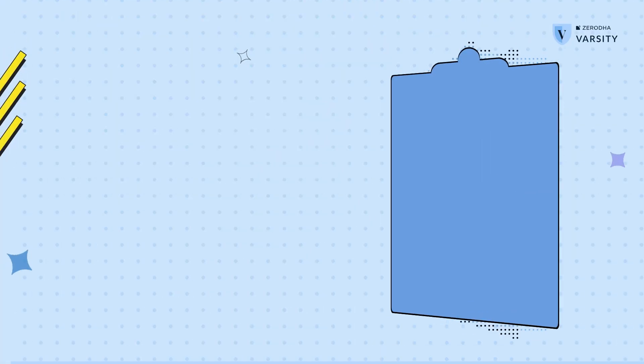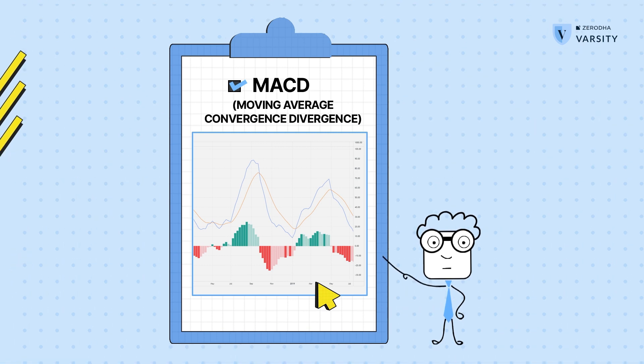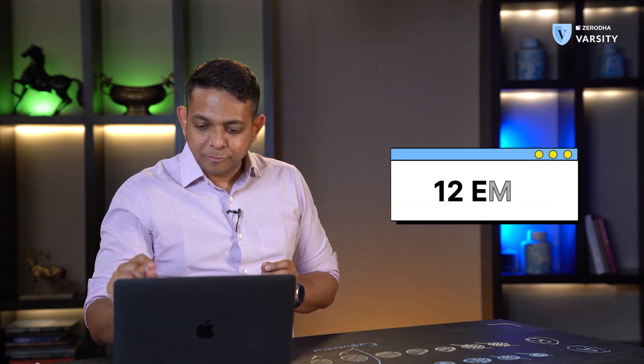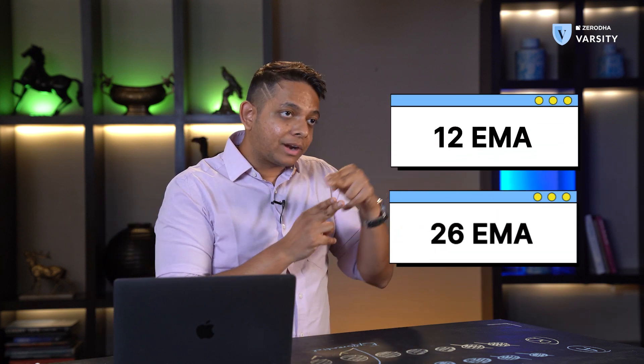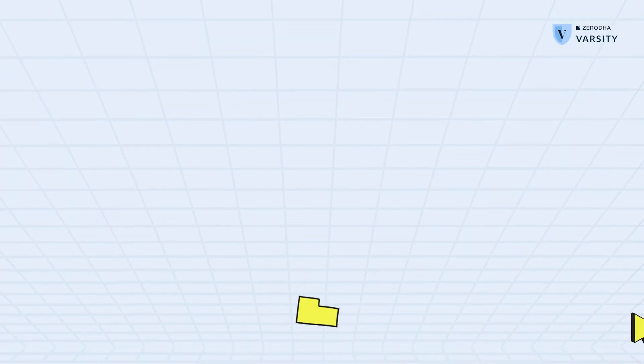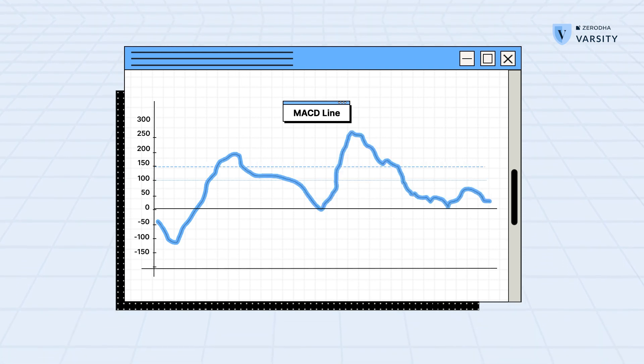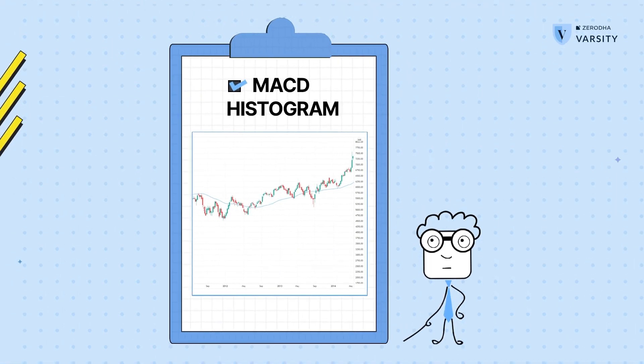The next indicator is the Moving Average Convergence Divergence, or MACD. This indicator is really old — it was started in the late 70s by Gerald Appel and is considered to be one of the most reliable momentum indicators by the trading community. Two exponential moving averages — the 12-day EMA and the 26-day EMA — are subtracted to get a value. If that value is negative, you get an MACD line below zero; if positive, the MACD line is above zero. You can use the MACD line or a histogram, which is slightly easier to see as the MACD moves above and below zero.